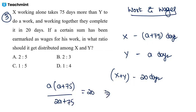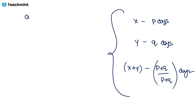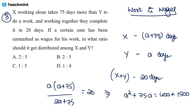Now you have to calculate the value of 'a', making sure it is a positive integer since time taken cannot be negative. Expanding gives: a² + 75a = 40a + 1500, which simplifies to a² + 35a − 1500 = 0.